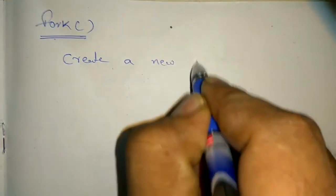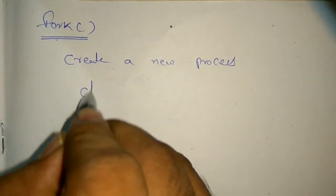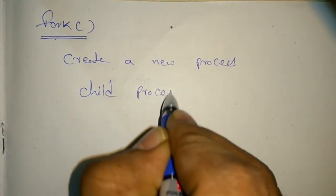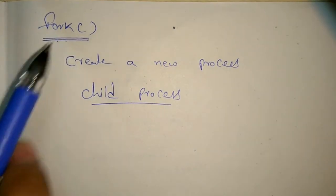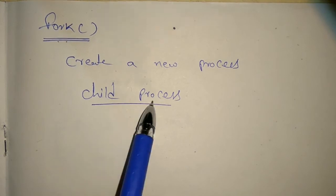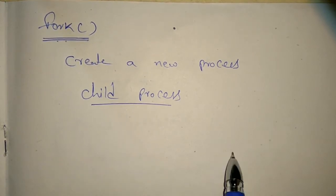Today we will see the fork system call. Fork system call is used to create a new process. This new process is also called a child process. When fork system call is executed, a child process is created, and this child process copies the same code of the parent process.